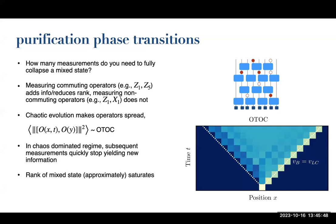In general, unitary evolution makes things that used to commute stop commuting. If you measure one thing, let it spread, then measure something else that sits in the shadow of the first measurement, you're no longer getting new information. This is the basic intuition for why there are two regimes: one where unitary evolution wins so most measurements don't yield new information, and one where the measurement rate exceeds this so you can basically unzip the entire state at once. Those two regimes correspond to different phases.